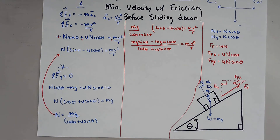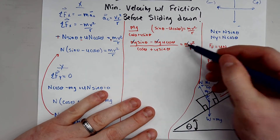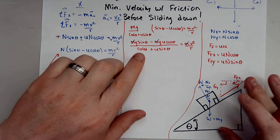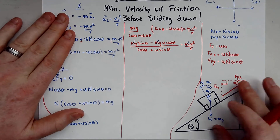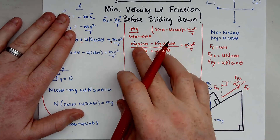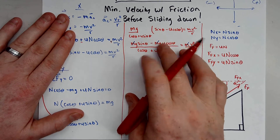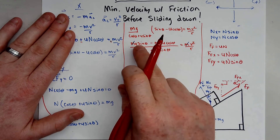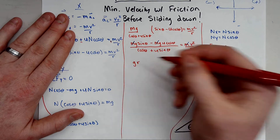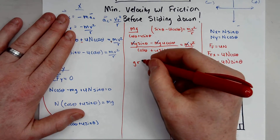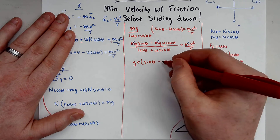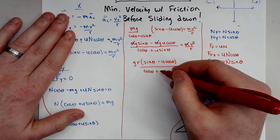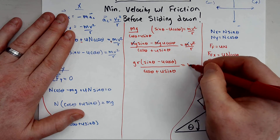Notice that the masses cancel out — as they almost always should in Newtonian physics equations. We check if anything else cancels — it does not. Multiplying both sides by r and factoring out g·r from the numerator gives: v² = g·r · (sine theta minus mu cosine theta) / (cosine theta + mu sine theta).